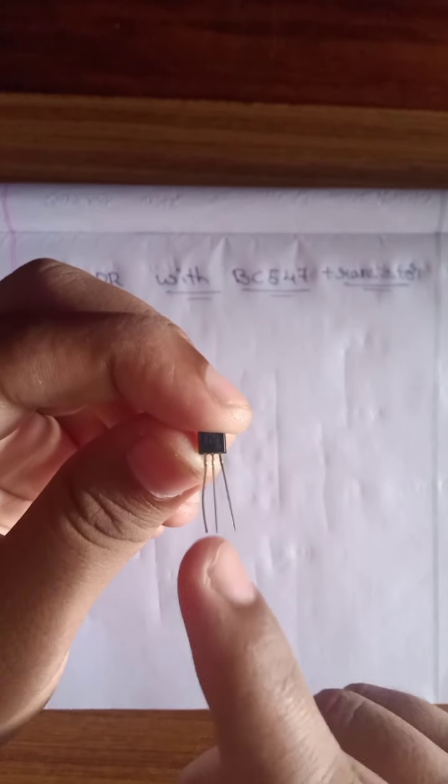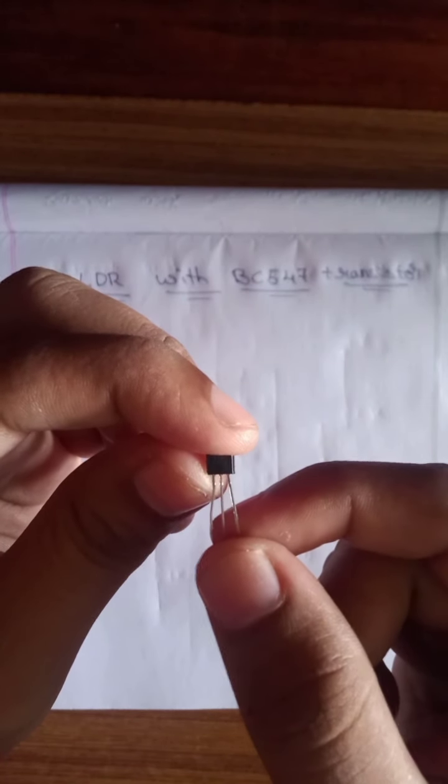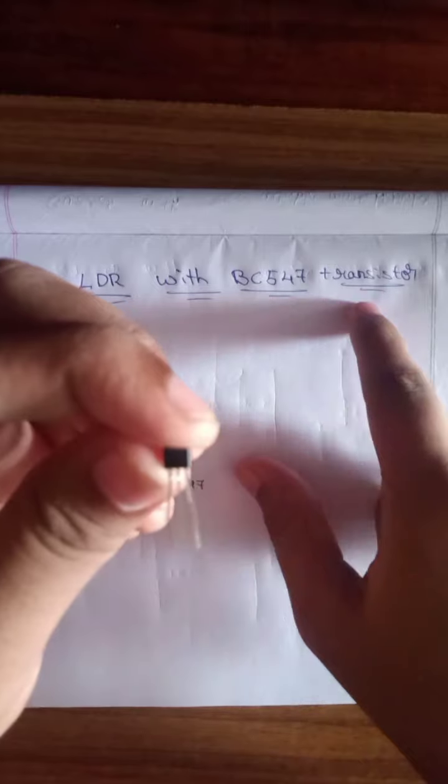Remember friends, Collector, Base and Emitter. This is all about the transistor. The name of the transistor is BC547 transistor.